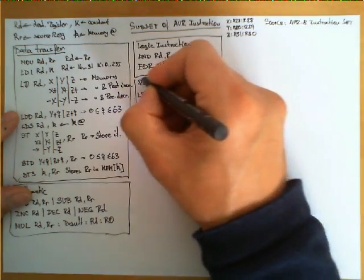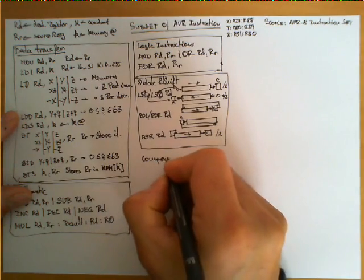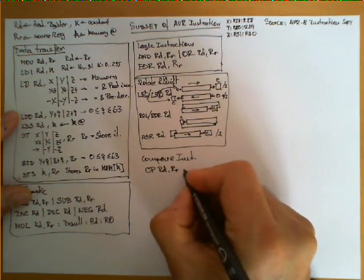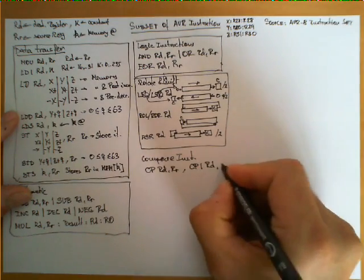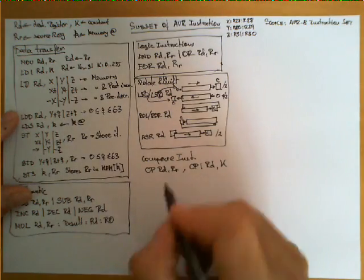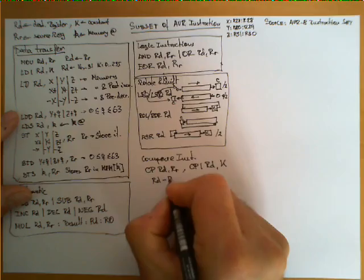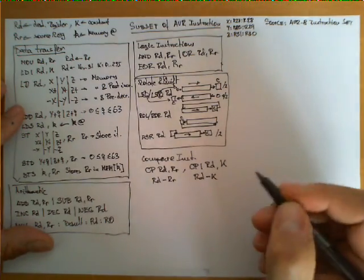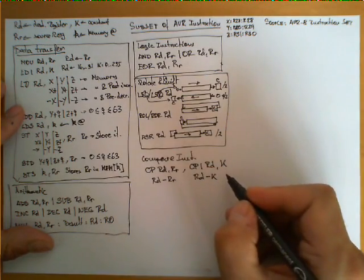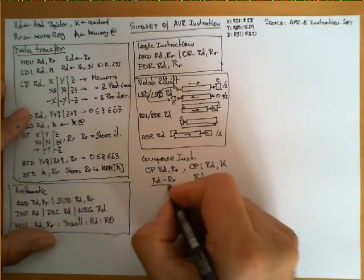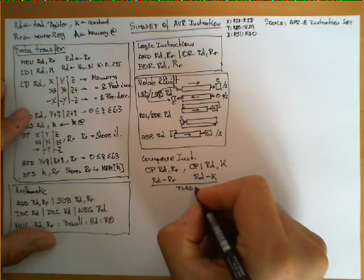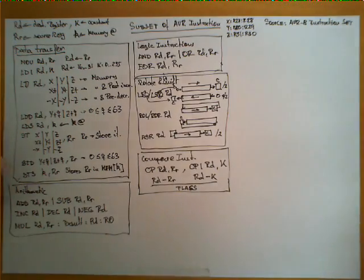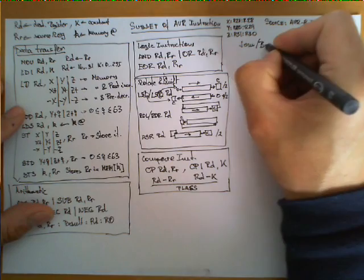The next category is compare instructions. Two instructions are included: CP RD, RR and CPI RD, K where K is a constant. The only thing these instructions do is perform a subtraction — CP does RD minus RR, and CPI does RD minus K — but the result is not stored in any register; it is only reflected in the flags of the status register. This category is very powerful when combined with jump and branch instructions.